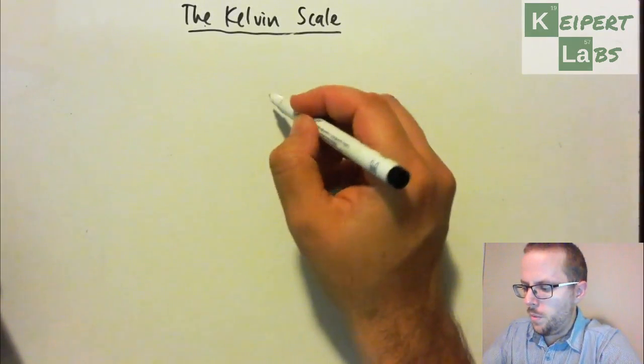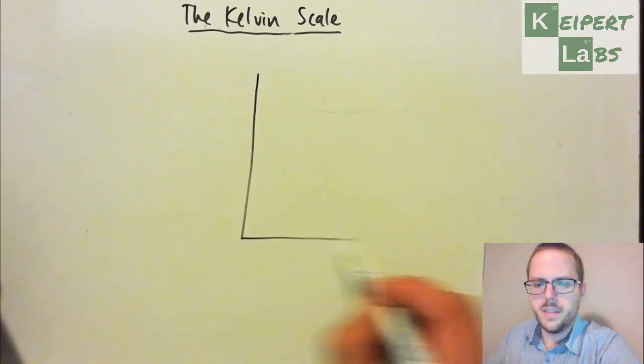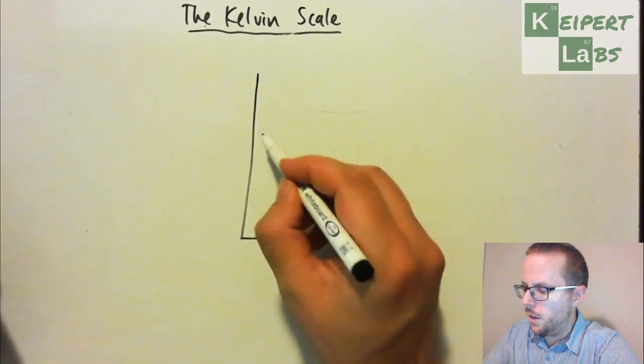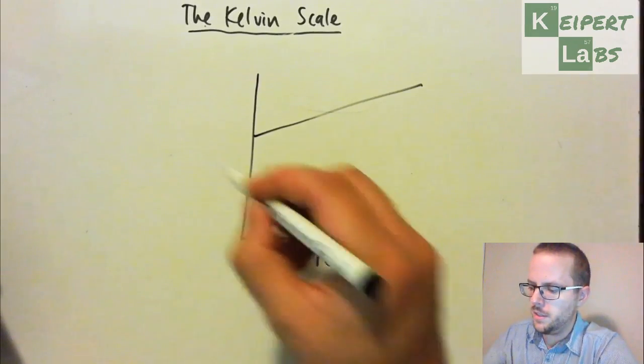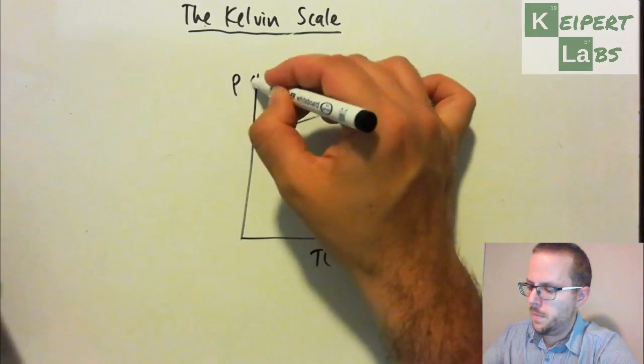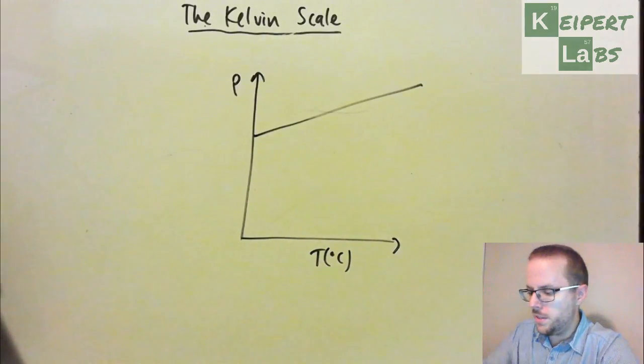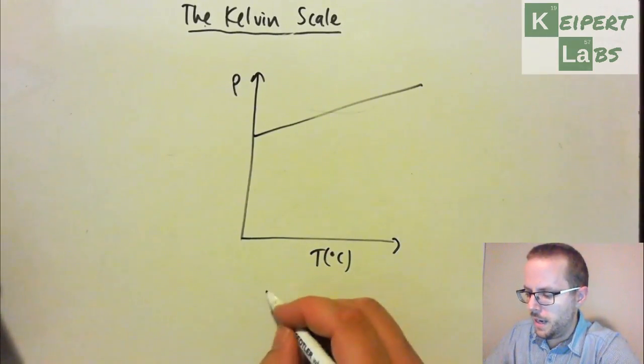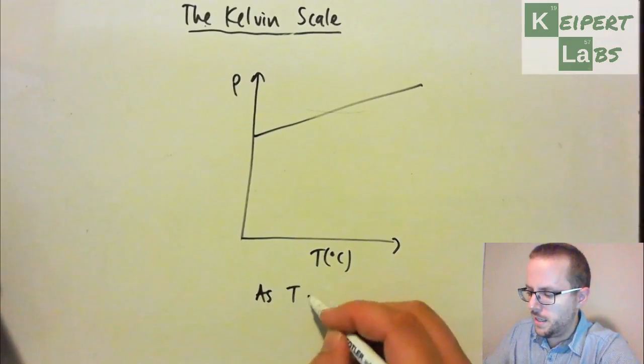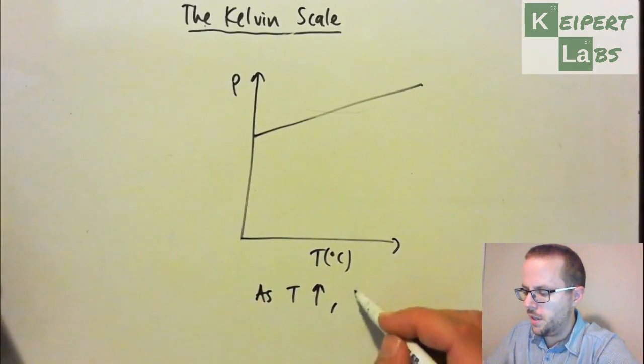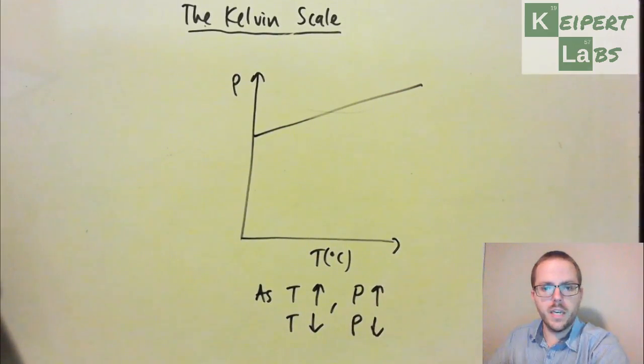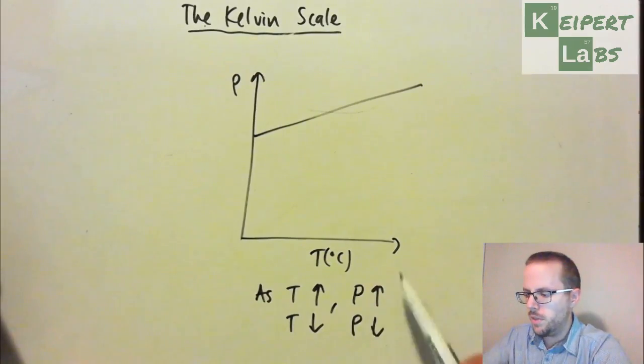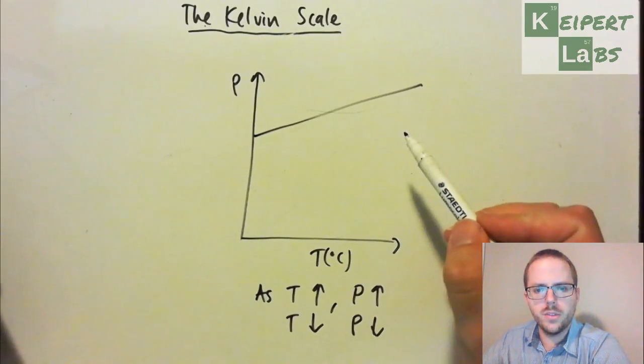So what I want to do is set it up like this. We saw this sort of relationship. We saw temperature in Celsius and pressure. And so what we saw is that as T increased, so as the temperature increased, the pressure increased. As temperature decreased, pressure also decreased. So that kind of helps to account for a line that looks like this.